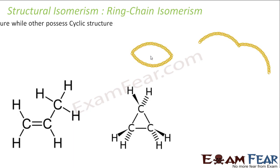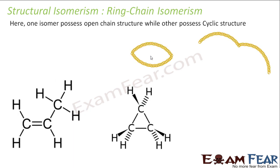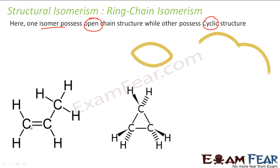Then we have ring-chain isomerism, where one isomer possesses an open structure while the other possesses a cyclic structure. In this case, the molecular formula is the same for both, but one is open and the other is cyclic. These are called ring-chain isomers because one is a chain and the other is a ring.